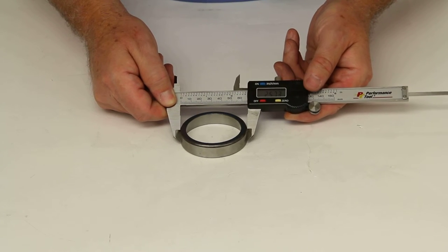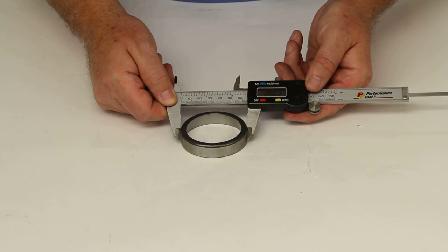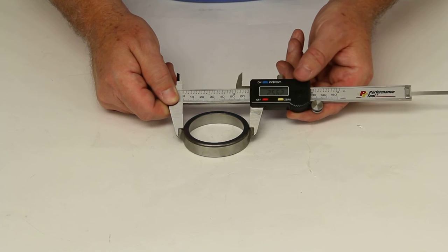So the outer diameter on this will be 2.563.